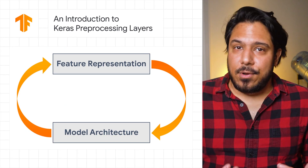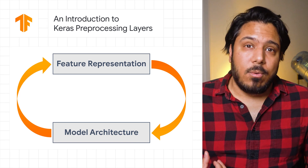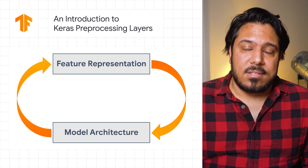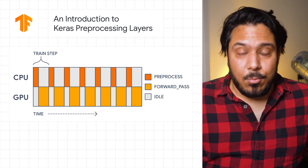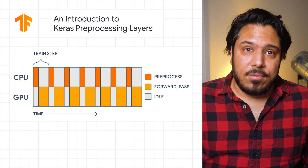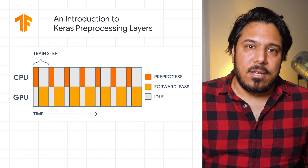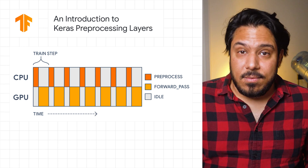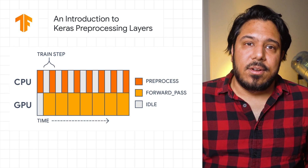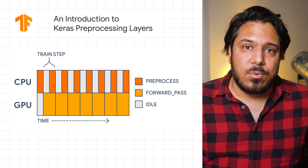Determining the right feature representation for your data can be one of the trickiest parts of building a model, and will more than likely require experimentation on your specific dataset before starting to get meaningful results. To help with this problem, we recently released Keras preprocessing layers, a set of Keras layers aimed at making preprocessing data fit more naturally into model development workflows, saving you time and effort. Check out the link to the post to see how to use the layers to build a simple sentiment classification with the IMDB Movies Review dataset.